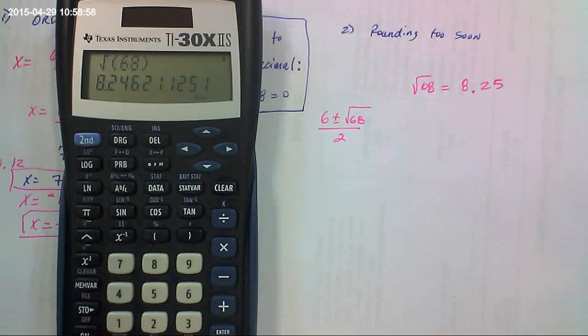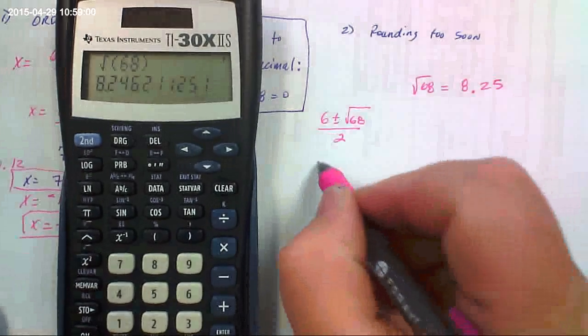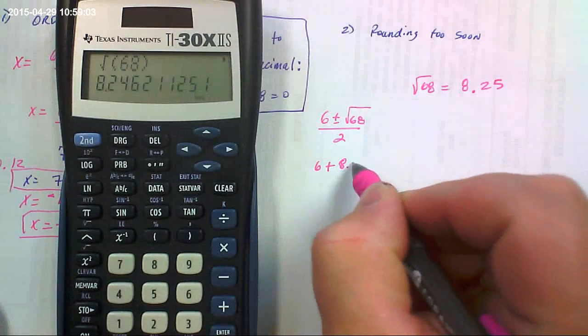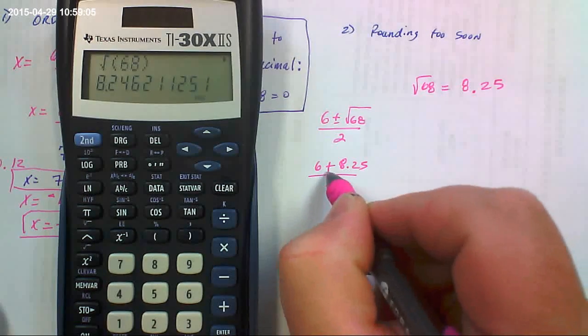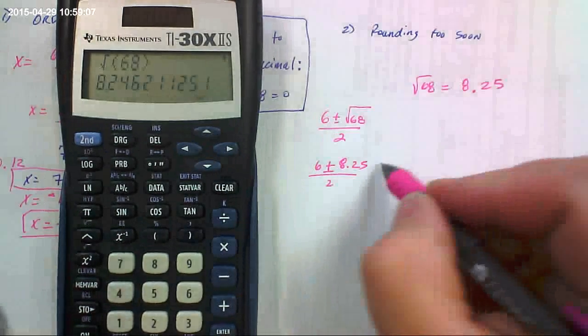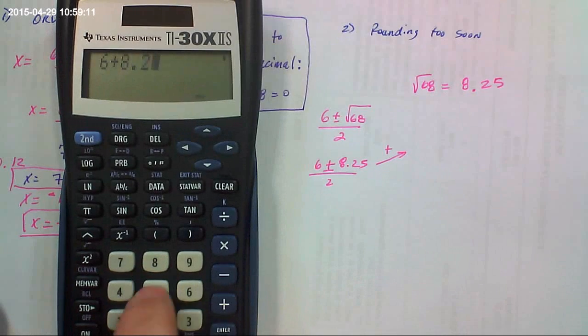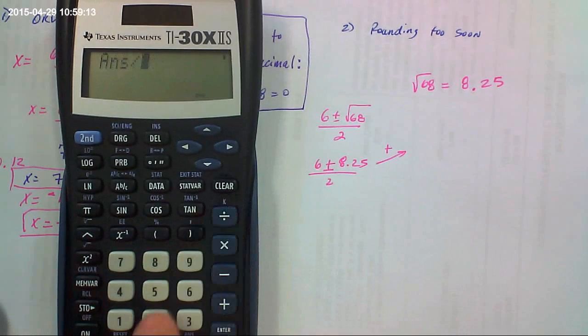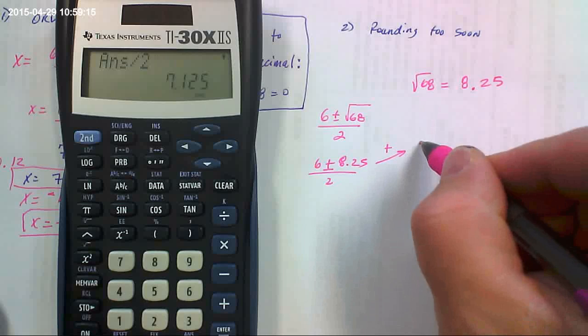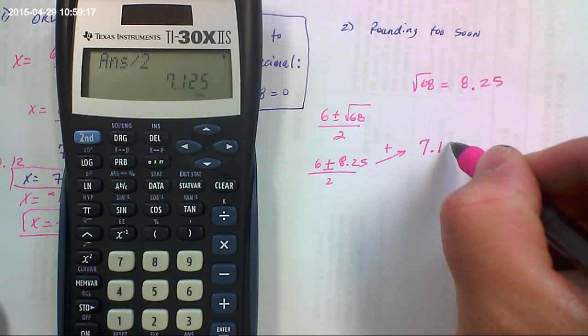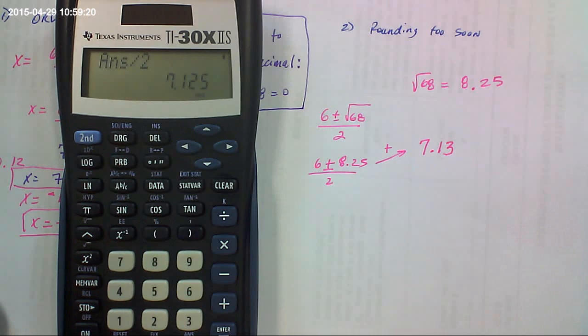Correct, to the second decimal place. So then what they do is they do this math right here. 6 plus 8.25 over 2, 6 plus or minus. So doing our plus right here, 6 plus 8.25 equals, divided by 2, equals 7.125, which would round to 7.13.